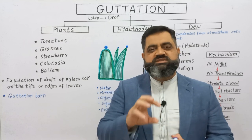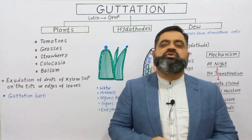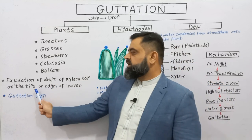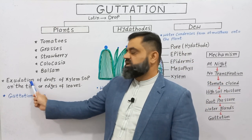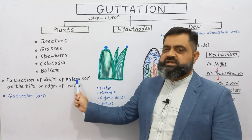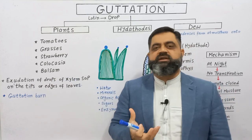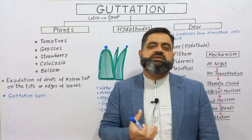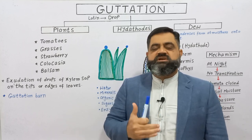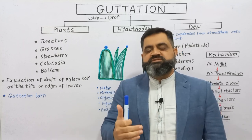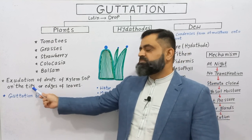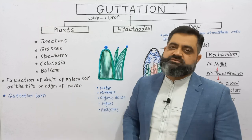So what is the proper definition of guttation? Guttation is the exudation of drops of xylem sap. Xylem sap is the water content present in the xylem of plants, which comes into the leaves and is then exuded out from the tips or edges of the leaves.